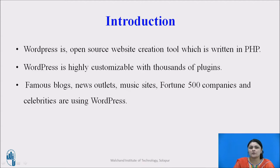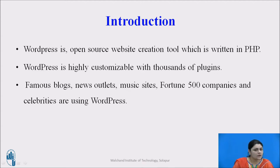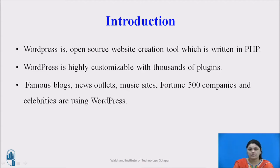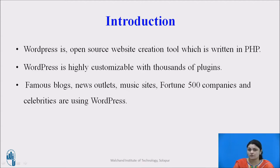If you head over to the WordPress site showcase, you will be impressed by the number of well-known sites and famous people using WordPress to power their websites. You are in good company if you use WordPress to publish on the web. Many famous blogs, news outlets, music sites, Fortune 500 companies and celebrities are also using WordPress. For example, famous blogs like Mashable and TechCrunch are both on WordPress. News outlets like the New York Times blogs also use WordPress — that should tell you something about how powerful and safe it is.